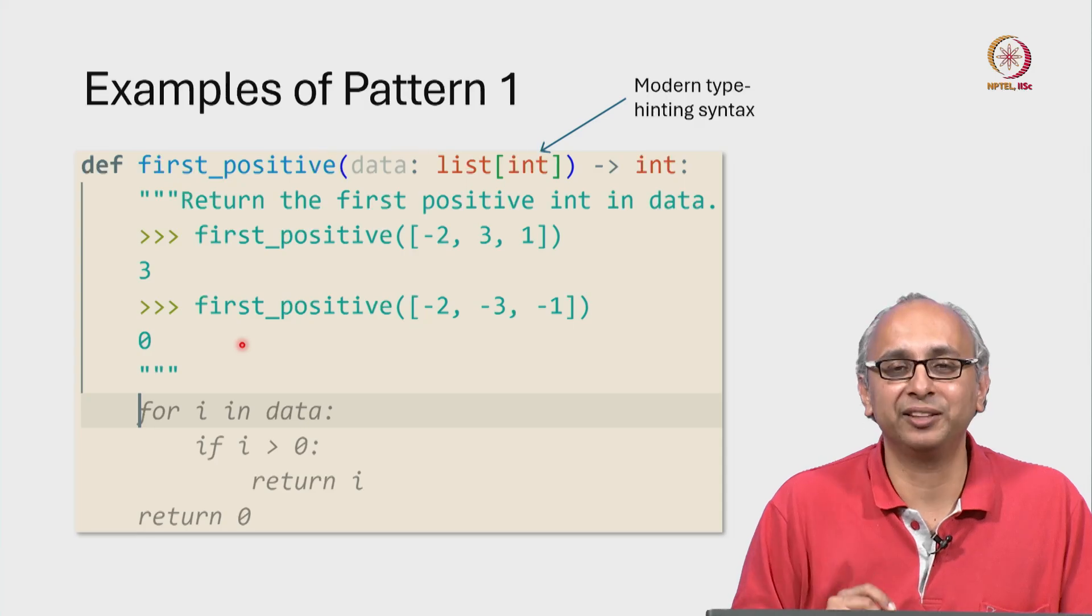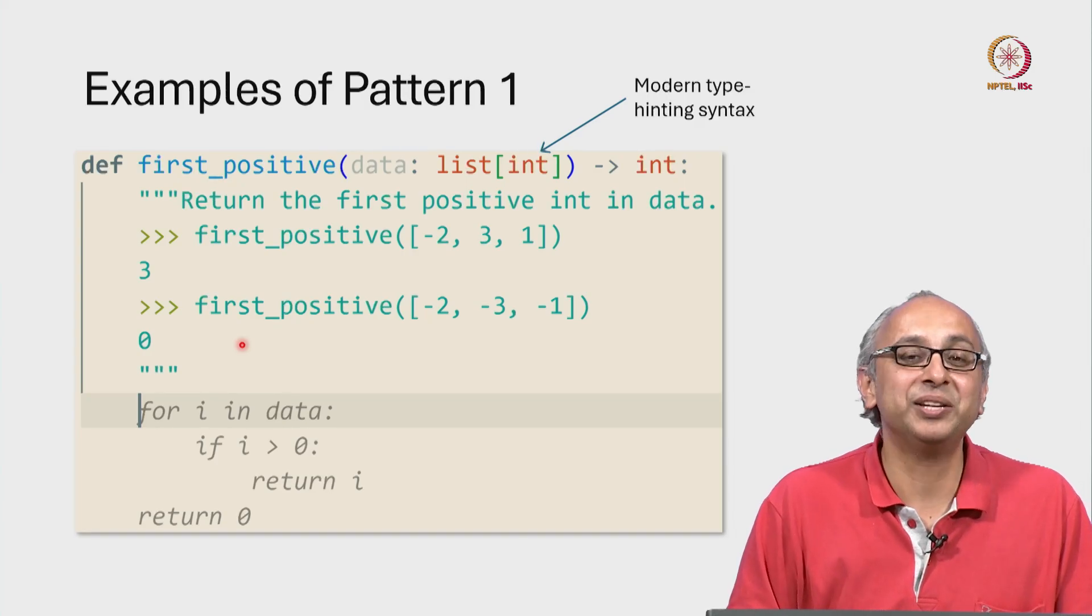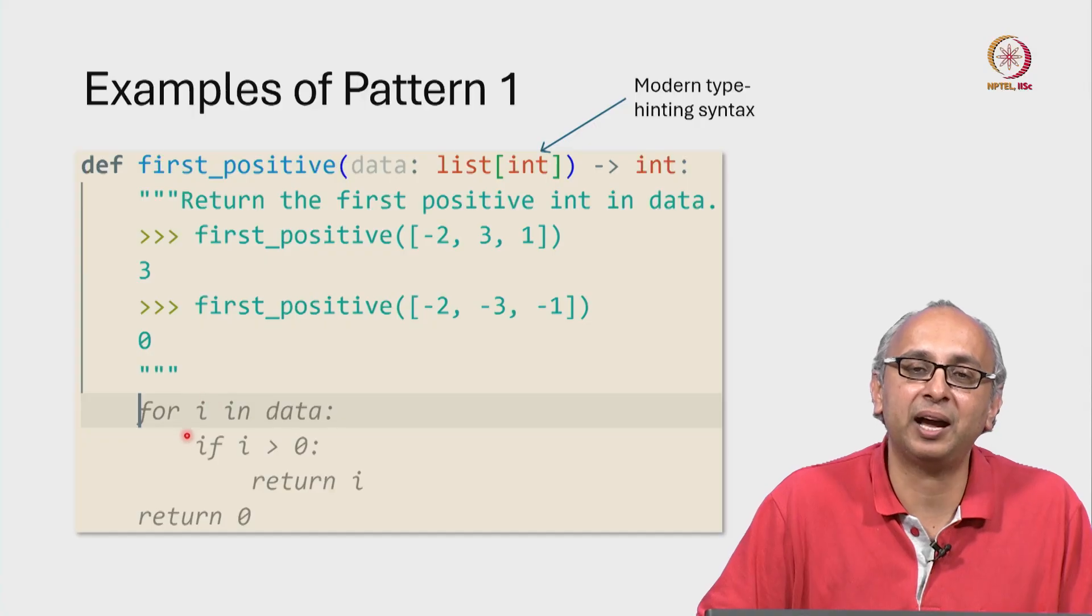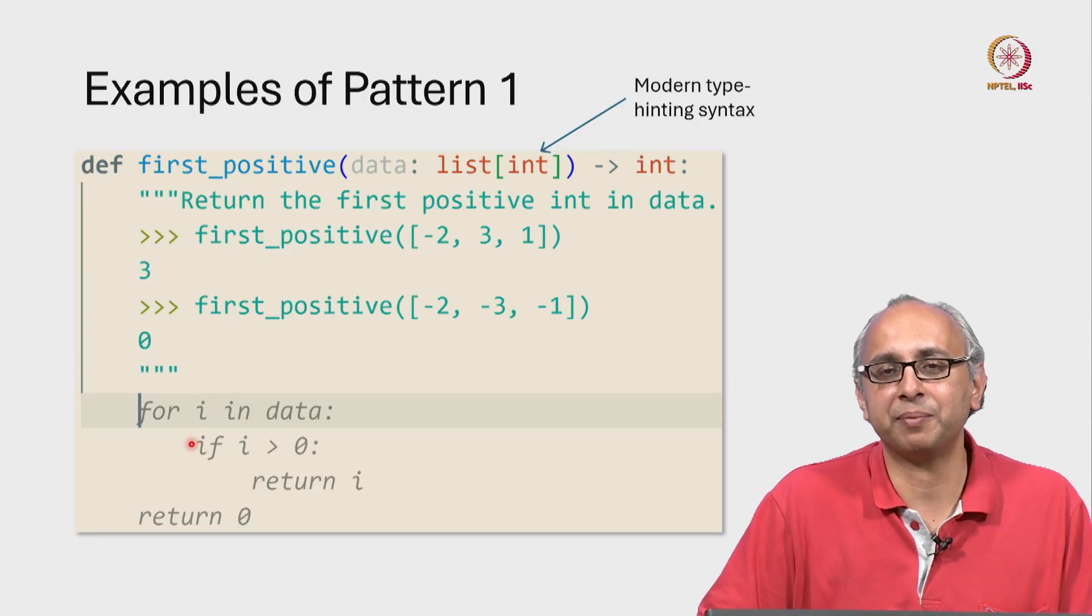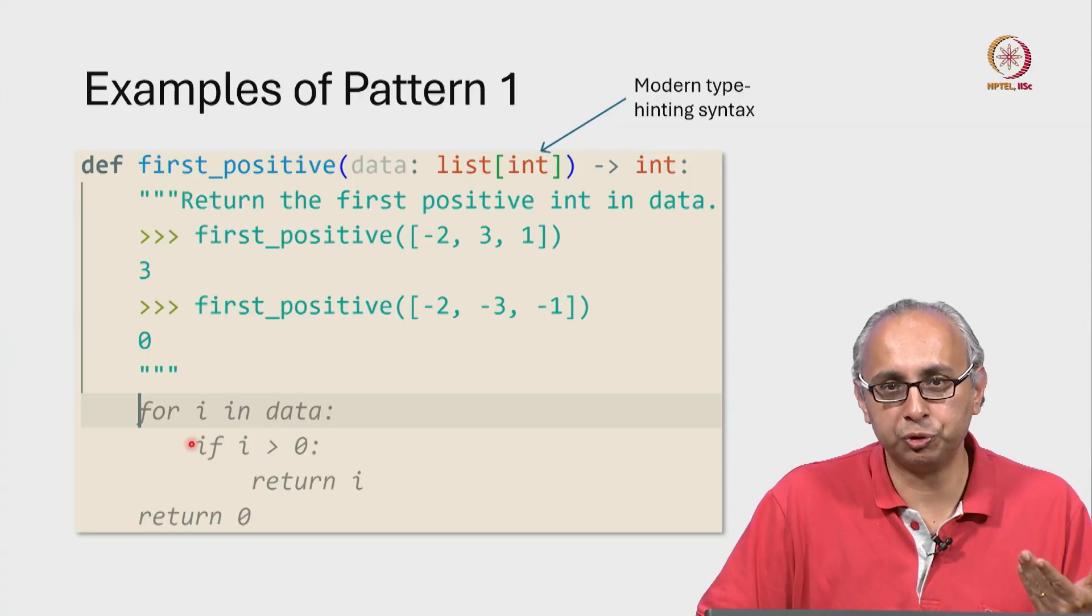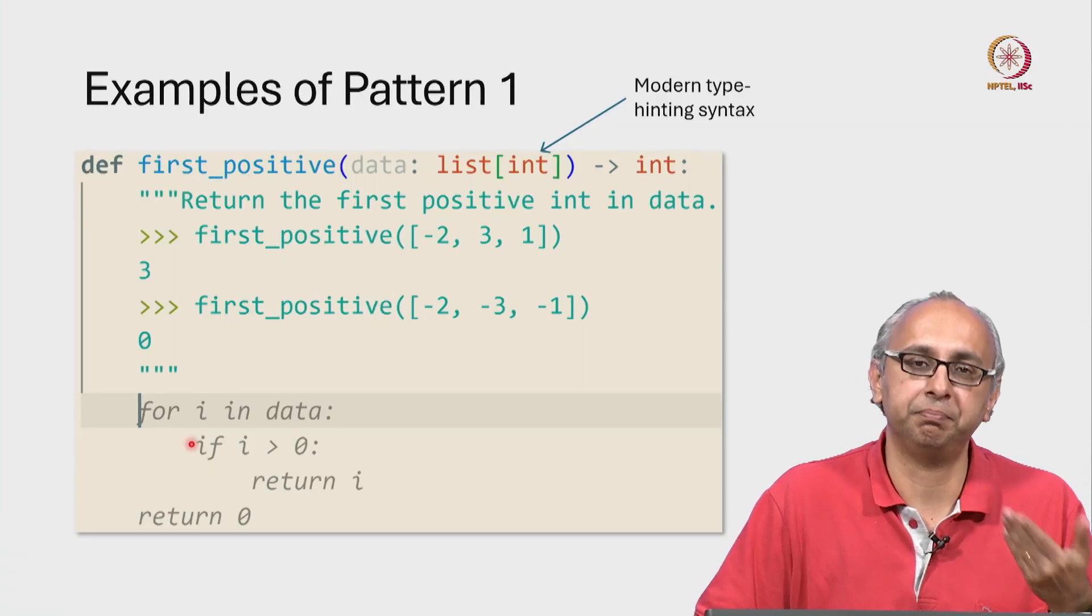Now, there's one small thing that I don't like about this AI generated suggestion. I don't like the choice of this variable i. I would have preferred to call it something like item. And remember, it's important for you to choose variable names that are meaningful.